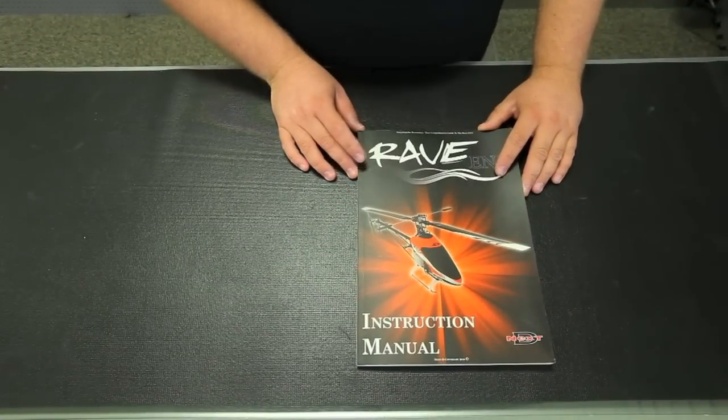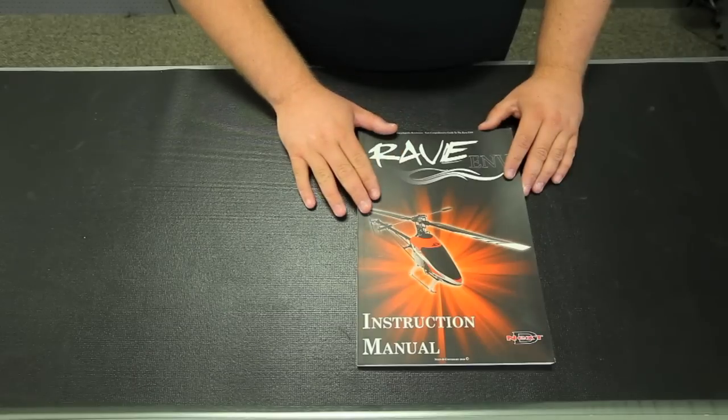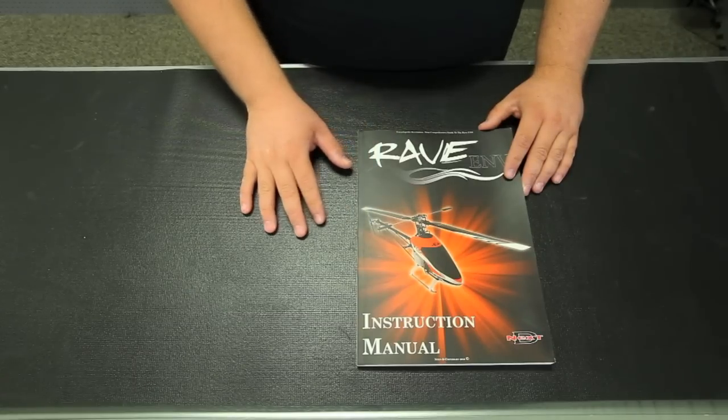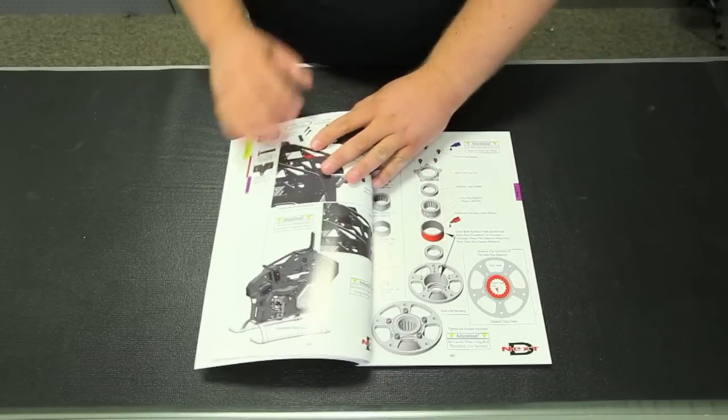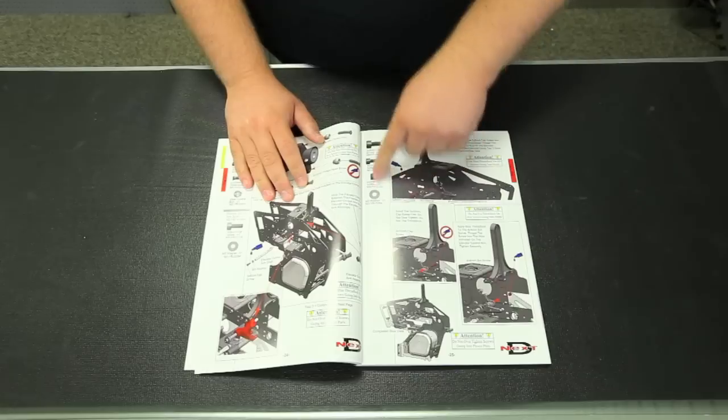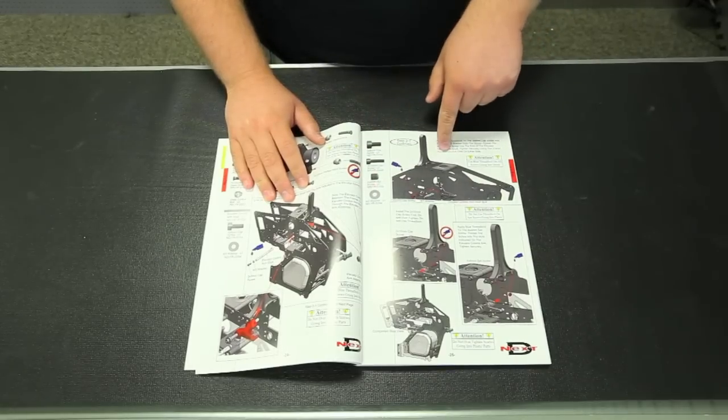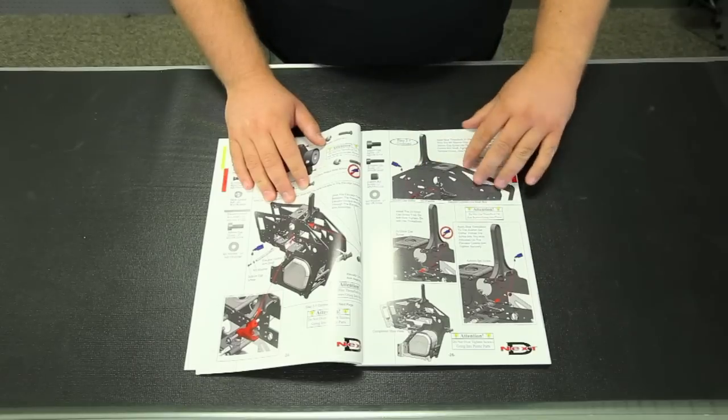Okay, we're going to have a closer look inside the Rave ENV manual right here. The book is quite thick, but it's very informative. You shouldn't have any questions at all after reviewing this before you start your build. As you can see here, it's very similar to the Smola Rave manual. All your parts are listed that are needed for the step that you're working on.